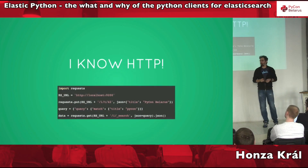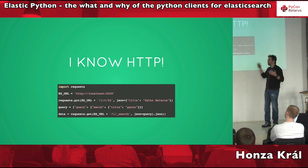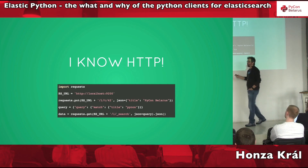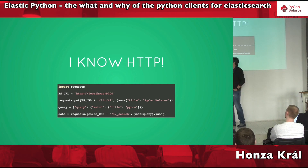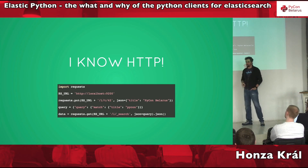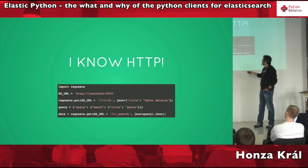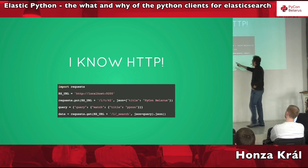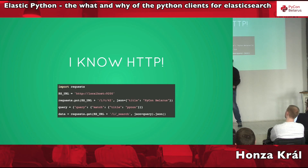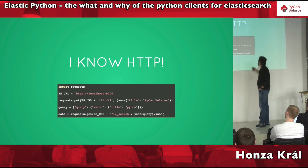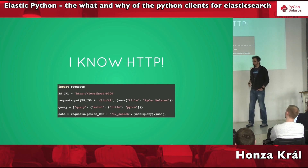This is how you could use Elasticsearch. Because everybody knows HTTP, you'd just type 'import requests' and talk to Elasticsearch on port 9200, which is the default. You can index a document by doing a PUT on a URL like: index 'i', document type 't', document ID 42 — because when you don't know, it's always 42. It's a simple JSON document with just one field called 'title' containing 'PyCon Bella Rose.'